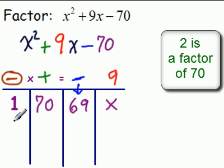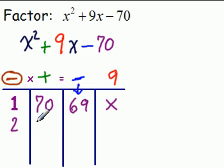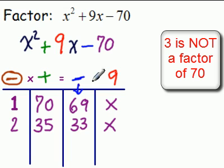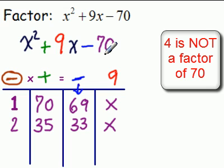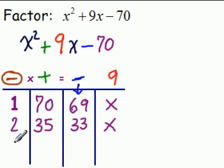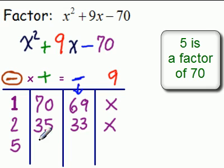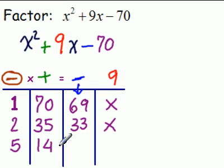2 divides into 70. 2 goes 35 times. The difference is 33. That's not 9. 3 goes into 70, nope. So we don't use 3. 4 goes into 70, no. So now we're up to 5. 5 goes into 70, 14 times. 14 minus 5 is 9. That's exactly what we want.